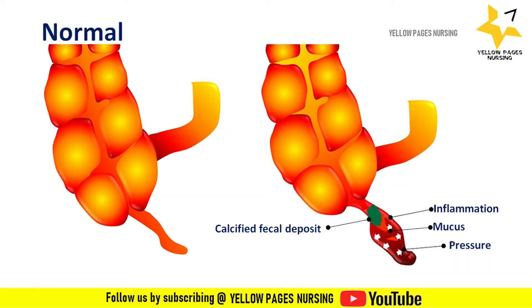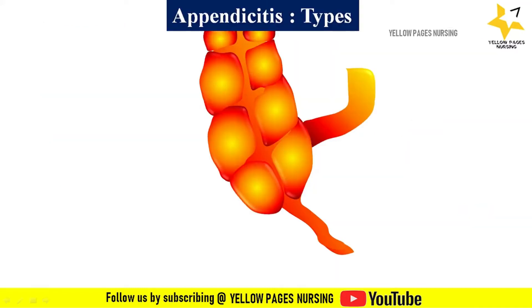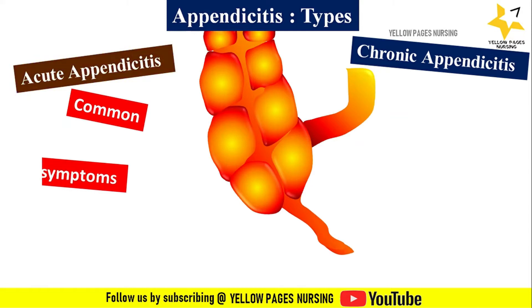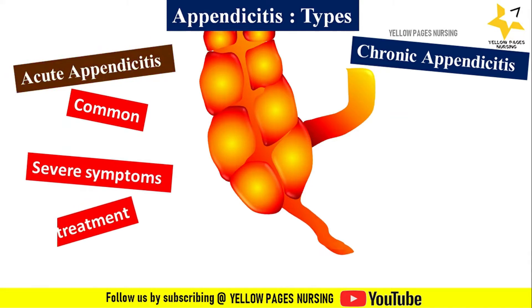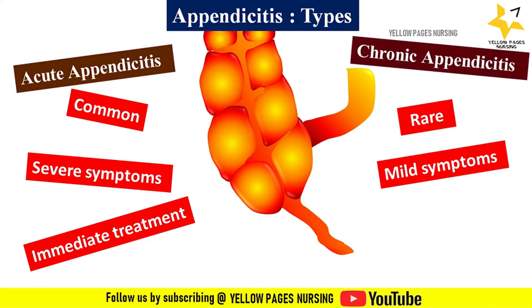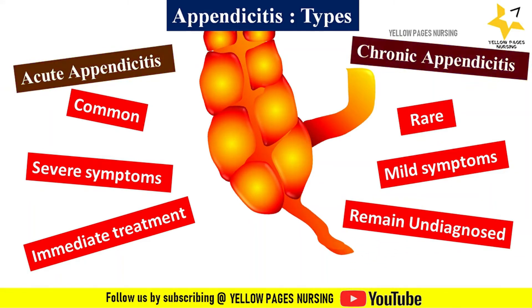There are two types of appendicitis: acute and chronic. Acute appendicitis is the most common, has more severe symptoms, and appears suddenly within 24 to 48 hours, requiring immediate treatment. Chronic appendicitis is rare, with milder symptoms that last for a long time and can disappear and reappear; it can go undiagnosed for several weeks, months, or years.